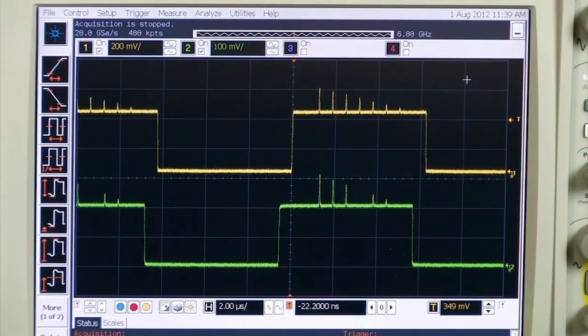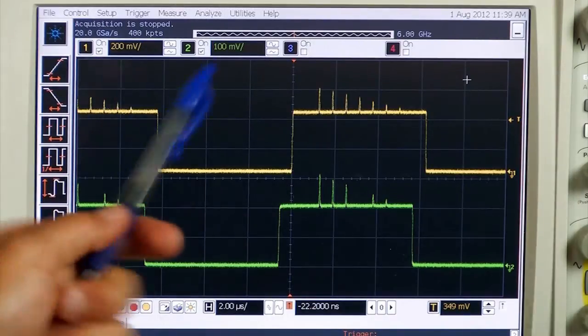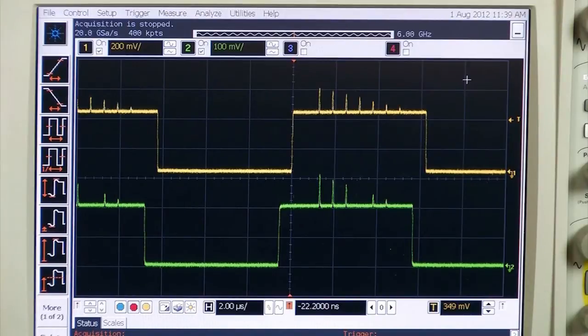At 80 kilohertz, we still have our seven spikes on our True Form waveform up top, but on DDS, we lost two of our spikes and we only have five spikes because we have skipped points.